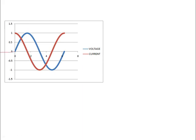Looking at the waveforms: the voltage (blue waveform) is always fixed as our reference. The current waveform is ahead of the voltage waveform. The current starts 90 degrees ahead — when we start the current waveform, the current is already at its maximum value at the 0-degree position of voltage, confirming that current is actually leading the voltage.